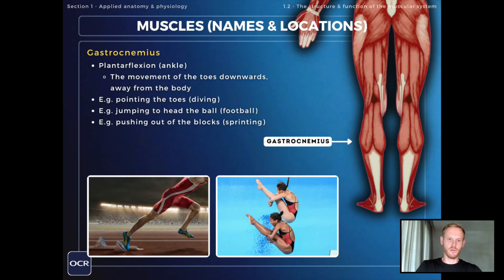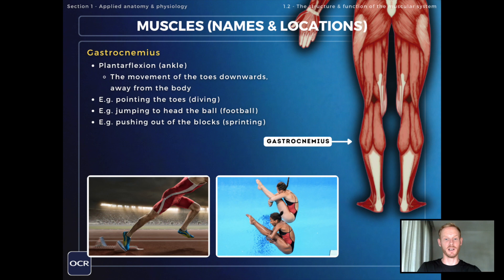Moving down the leg we have the gastrocnemius or calf muscle, which creates plantarflexion at the ankle joint. Plantarflexion is the movement of the toes downwards away from the body. Good examples include pointing the toes when diving or in gymnastics, pushing off when jumping to head the ball in football, and pushing out of the starting blocks in sprinting.